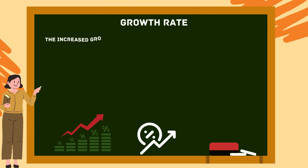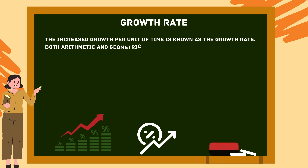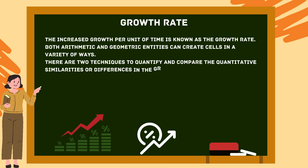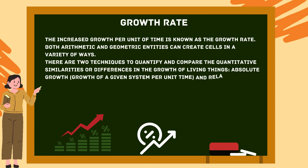Growth rate — the increased growth per unit of time is known as the growth rate. Both arithmetic and geometric growth patterns can occur. There are two techniques to quantify and compare growth in living things: absolute growth, which is growth of a given system per unit time, and relative growth rate, which is growth per unit time relative to the initial size.